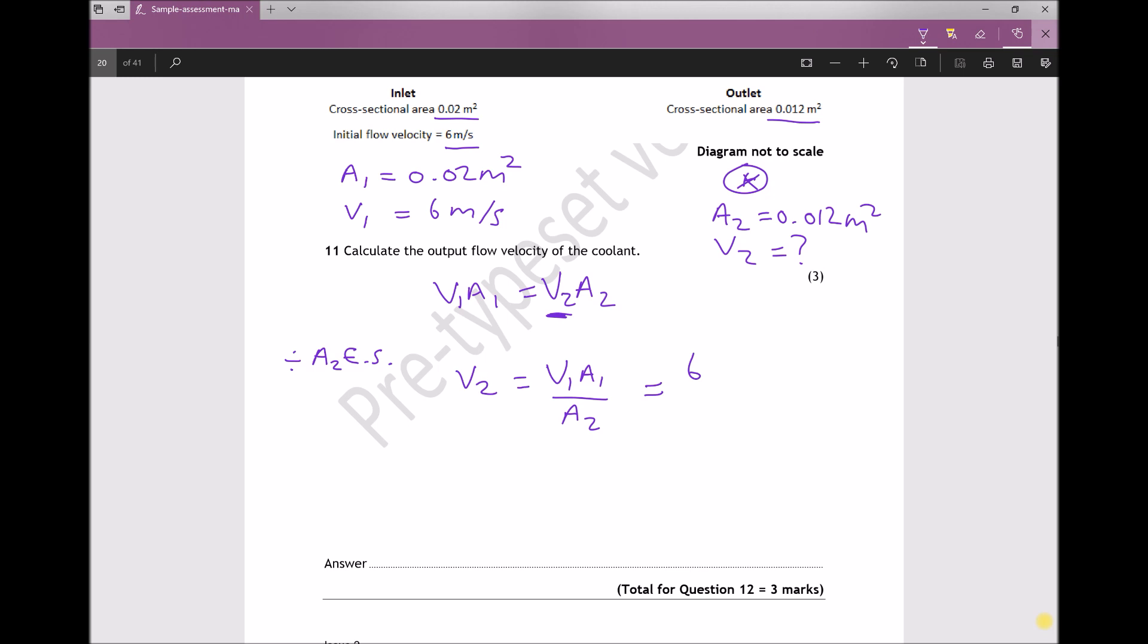And inputting our numbers, we get 6 times 0.02 over 0.012, giving us a velocity V2 equal to 10 metres per second.